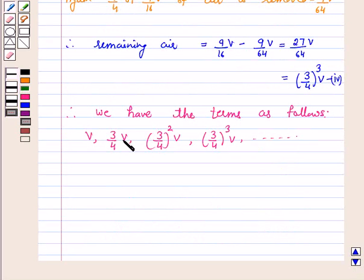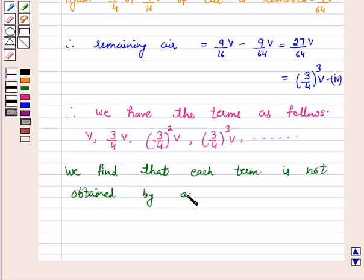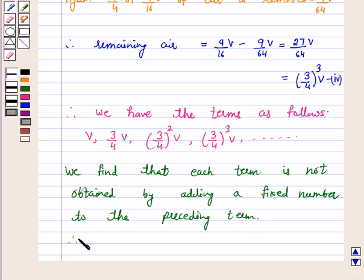We find that each successive term is not obtained by adding a fixed number to the preceding term. Because in AP, each successive term is found by adding a fixed number to the preceding term. Therefore, these terms do not form an AP.